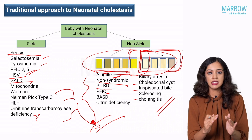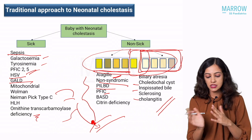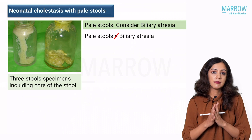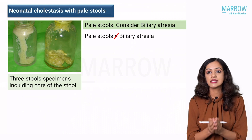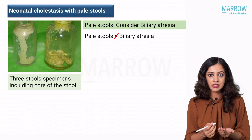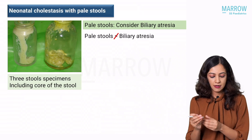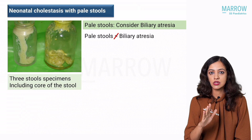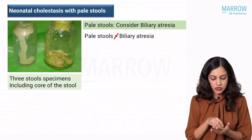So the first step is to assess the sickness of the baby and then go ahead with the stool color assessment. For a baby with pale stools, always ask the mother to show the stools. Without seeing it yourself, do not believe, because they may not be able to assess whether it is pigmented, ambiguous, or pale. Also remember to see the core of the stool — you have to spread the stool and see what exactly is the color at the core.